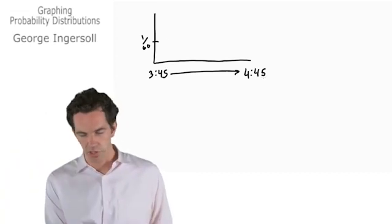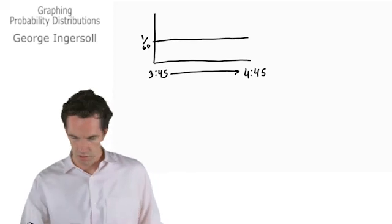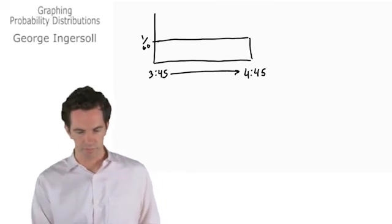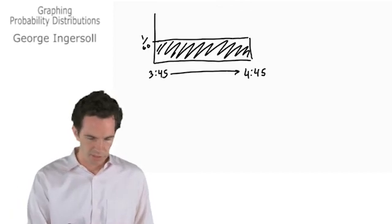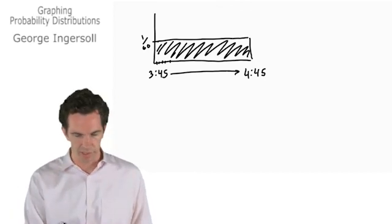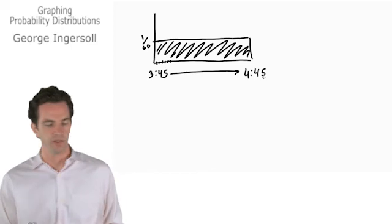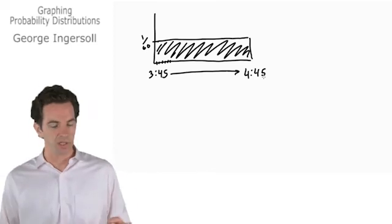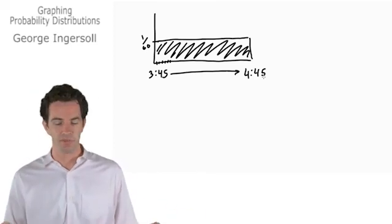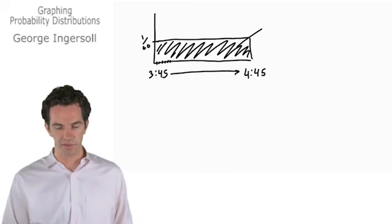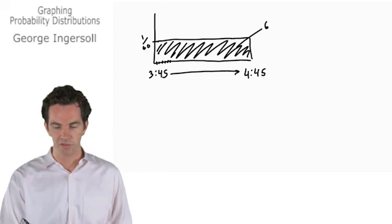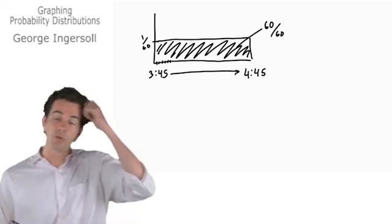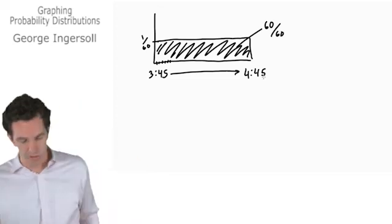Our probability distribution will look like this. There's just going to be 60 little hash points along the way and every single one of them has a probability of 1 over 60. You add those all up, it becomes 60 over 60, so our area underneath, this is not really a curve, in a uniform distribution it's just a line, is going to be 60 over 60. In other words, 1. That's our probability distribution.